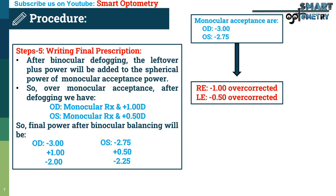When a myopic patient is overcorrected, rays focus behind the retina, and when viewing any object, accommodation gets stimulated to bring rays back onto the retina — requiring extra accommodative effort, leading to asthenopic symptoms. That's why binocular balancing is very important while doing refraction.